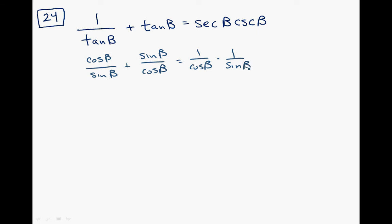Still not a ton jumping out at me. I'm seeing I'm adding two fractions, so I'm going to give them common denominators. I'm going to multiply this one by cosine over cosine and this one by sine over sine. That way the common denominator is cosine beta sine beta.